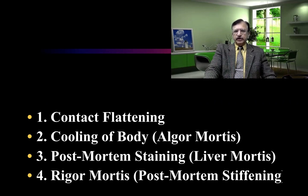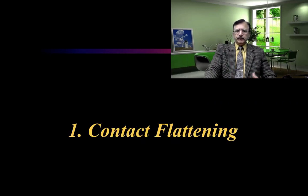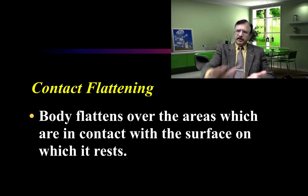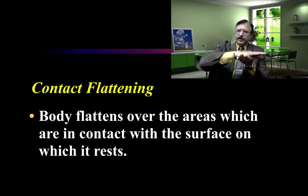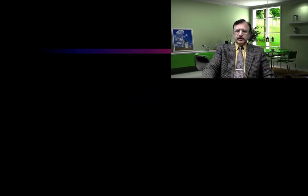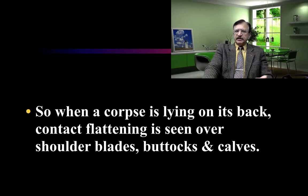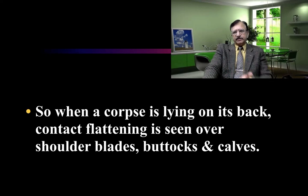Talking about contact flattening: the body flattens over the areas which are in contact with the surface on which it is resting. Because of loss of muscle tone, those parts subjected to pressure from the weight of the body become flattened. When a corpse is lying on its back, contact flattening will be seen over the shoulder blades, buttocks, and the calves — the posterior surface in contact with the surface on which it is lying.